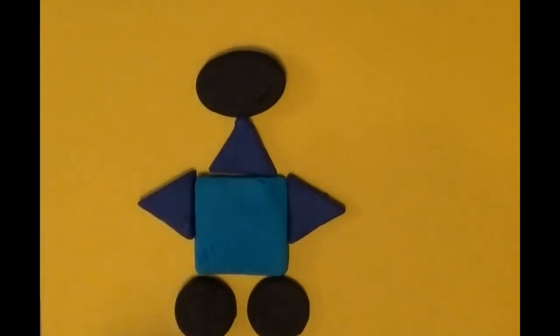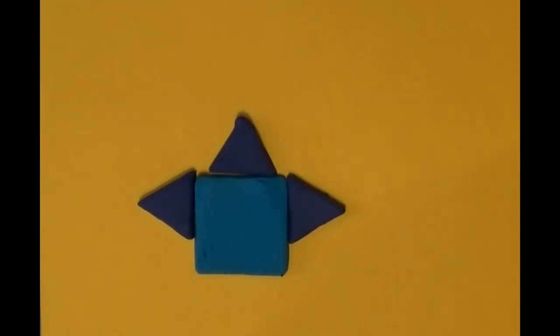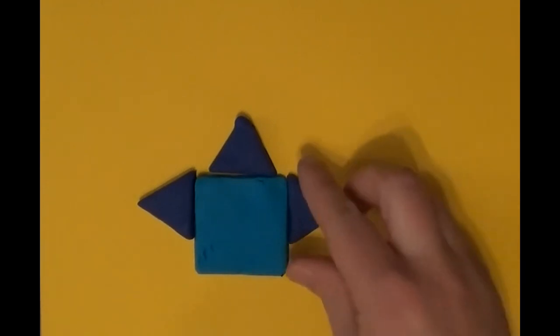If we wanted to, we could put a face on him. Maybe he's on Mars and he's going to explore the red planet, or maybe he's a helper robot in your house doing your dishes. But again, all shapes, just simple shapes from those cutouts.